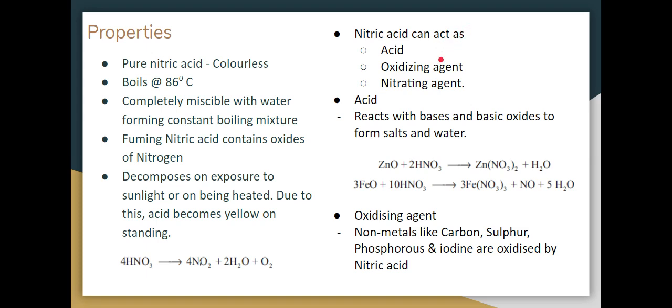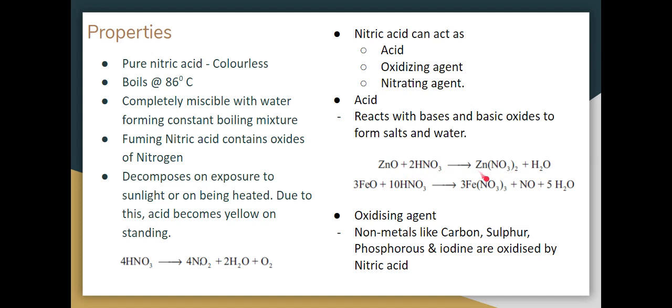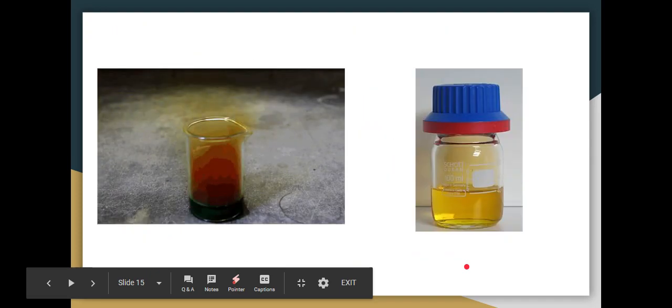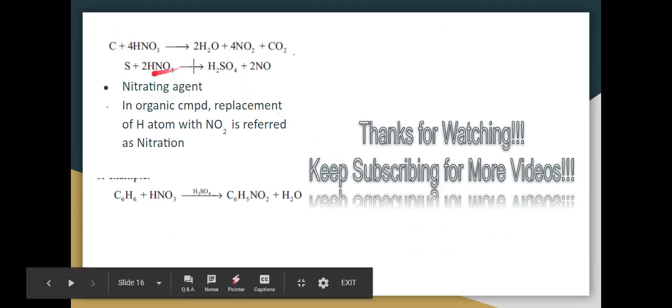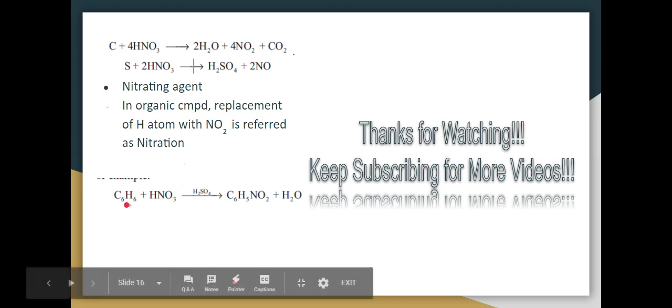Nitric acid acts as an acid, reacting with bases and basic oxides to form salts and water. As an oxidizing agent, non-metals like carbon, sulfur, phosphorus, and iodine are oxidized by nitric acid. Carbon and sulfur react with nitric acid to be oxidized, forming carbon dioxide, nitrogen oxide, and sulfuric acid. As a nitrating agent with organic compounds like C6H6, hydrogen atoms are replaced by NO2 to form C6H5NO2.